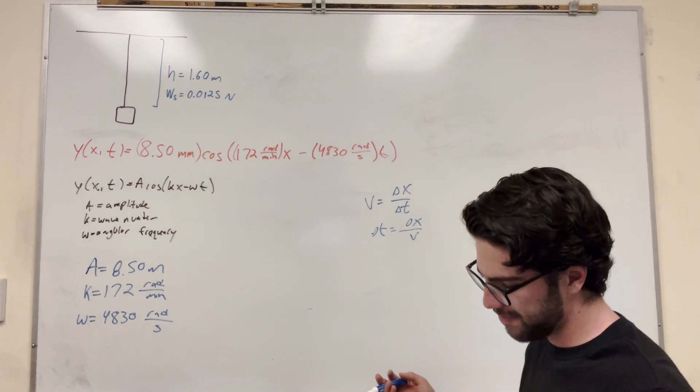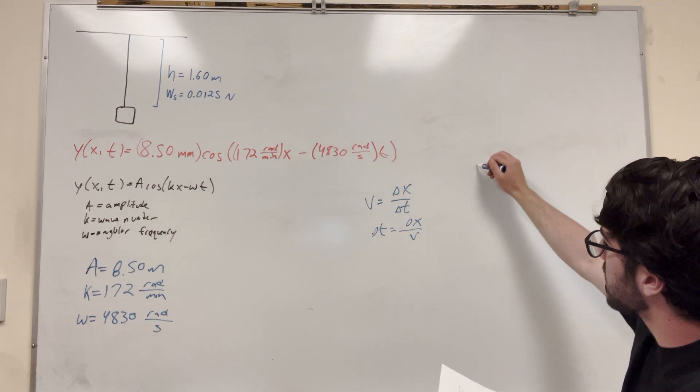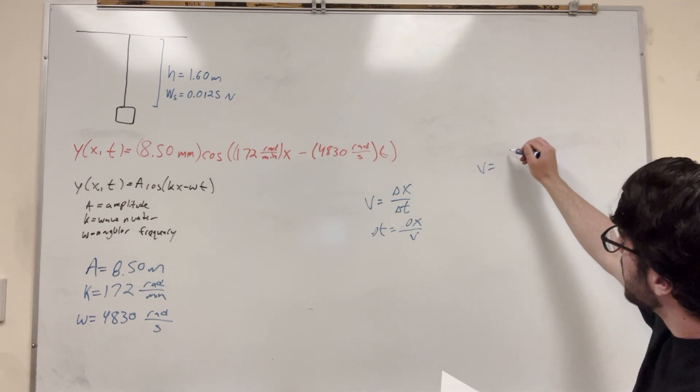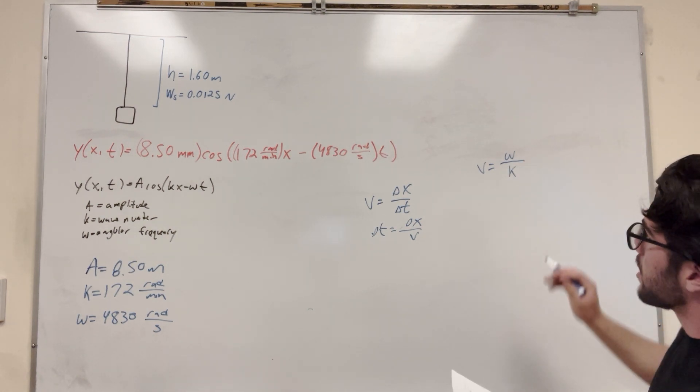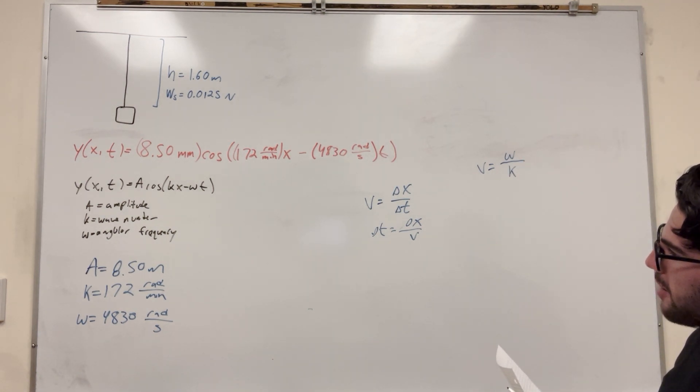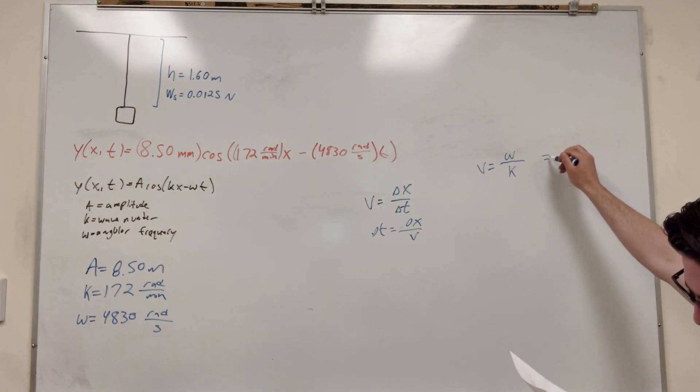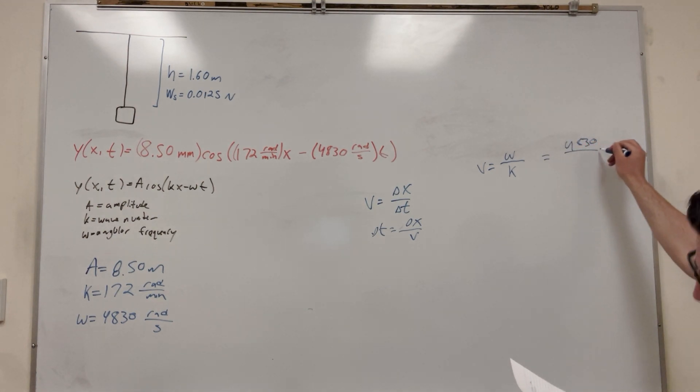So we can say Δt is equal to Δx over velocity. So we need to find velocity. Velocity in this case is going to be equal to that angular frequency divided by k, our wave number, and these should give you the right number. So if you put in your numbers for this, you're going to get 4,830 divided by 172, that's going to give you 28.1 meters a second.